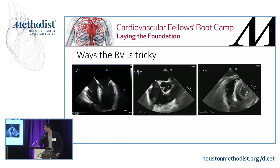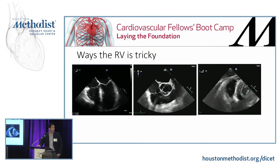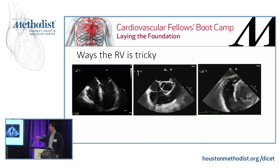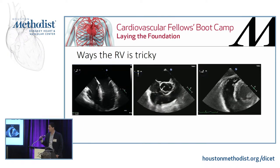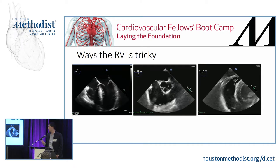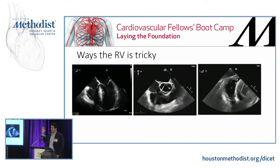In a mid-esophageal four-chamber view, it kind of looks like a triangle on the left. In an RV inflow-outflow view in the middle, it's a lopsided U-shape wrapping around the aortic valve. And then in a transgastric short axis on the right, it looks kind of like a crescent.